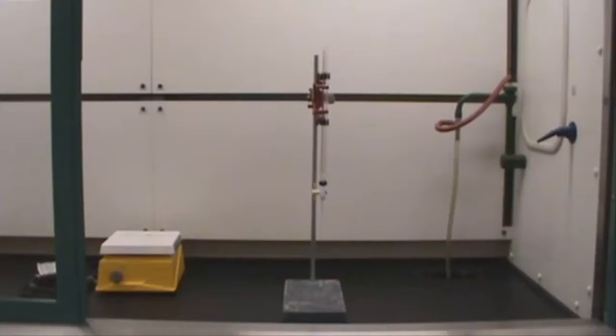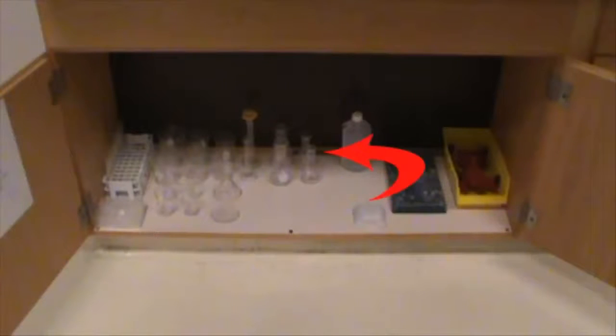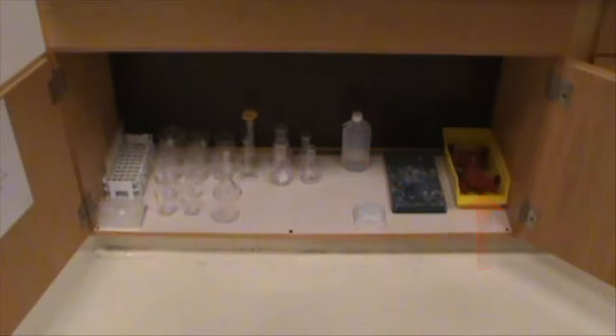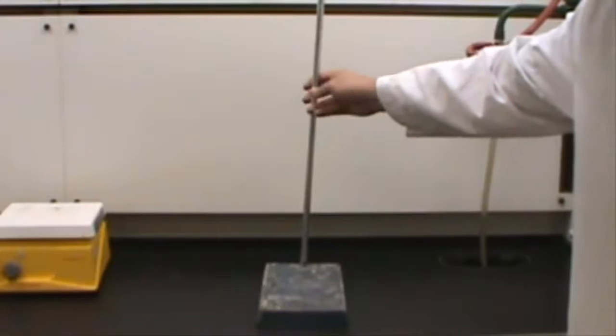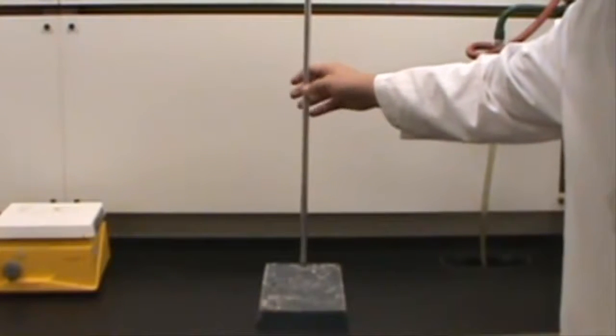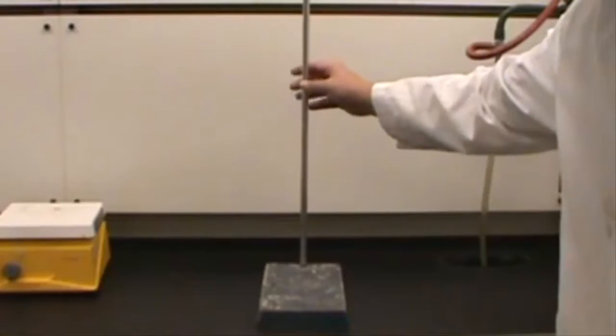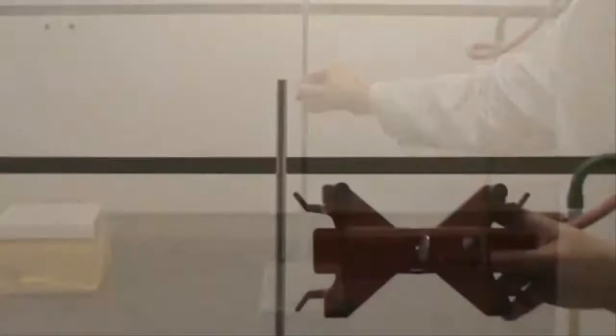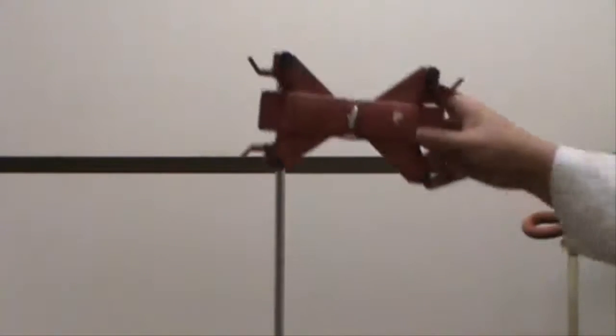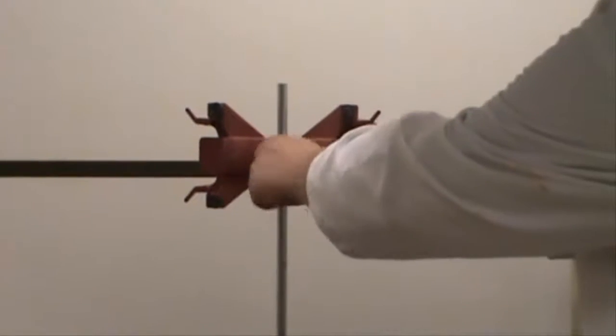You set up the burette by pulling out a few items: a ring stand, a metal rod, be careful pulling out the rod, and a burette clamp. Screw the rod into the ring stand, and slide the burette clamp onto the rod, and turn the screw on the burette clamp.